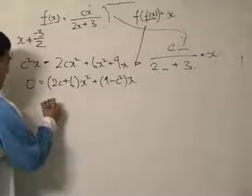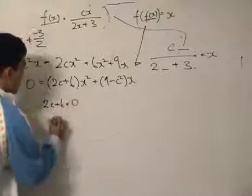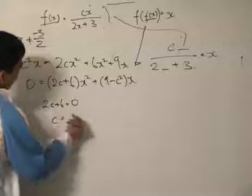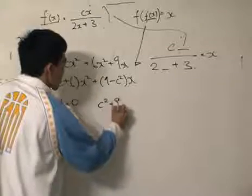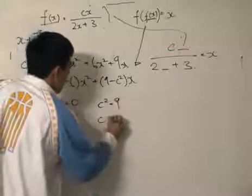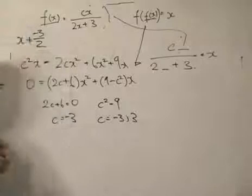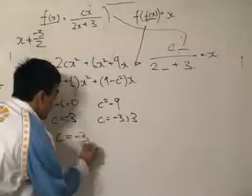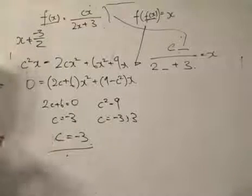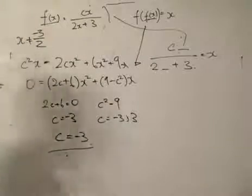From the x² terms: 2c + 6 = 0, which gives c = -3. From the x⁰ or constant matching: c² = 9, giving c = -3 or c = 3. Since we need both conditions satisfied simultaneously, c = -3 is the only value that works, and that is the answer.